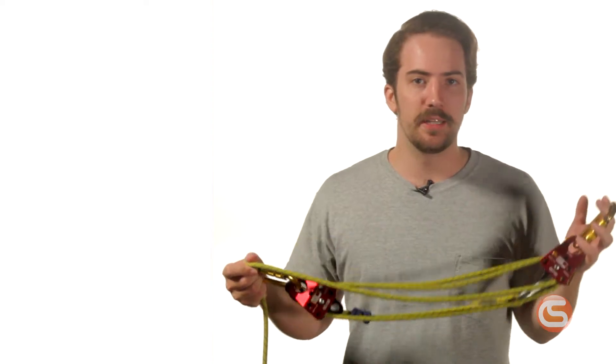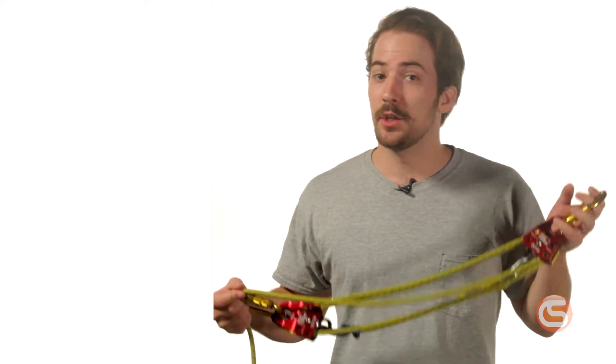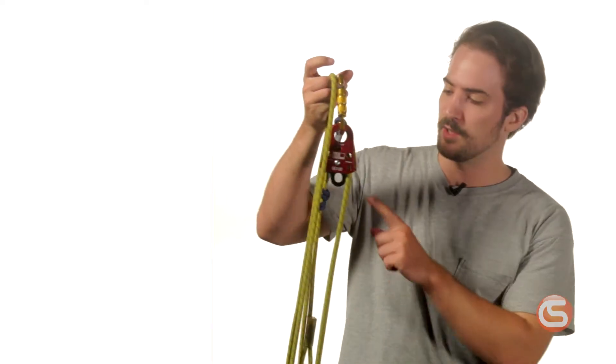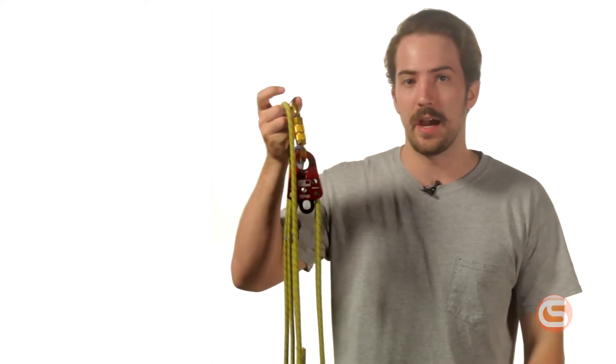So there we have it, your complete four to one haul system. For a five to one system, like we mentioned earlier, you can simply flip it over, add another small pulley right here, and pull it from the opposite direction.